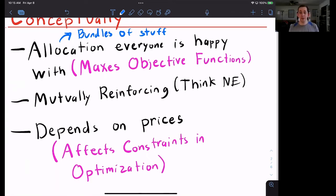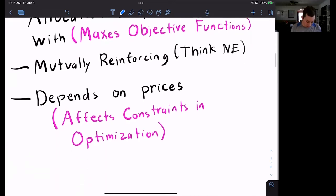This competitive equilibrium will depend on prices. Why? When we talked about the utility maximization problem, those prices affected our budget constraint. So if those prices are different, you would expect the competitive equilibrium to also be different because those budget constraints are different.